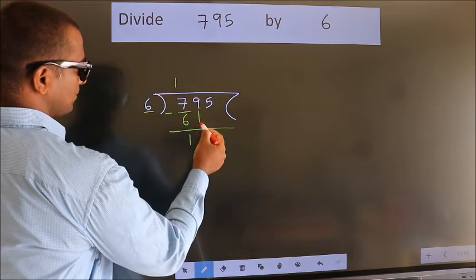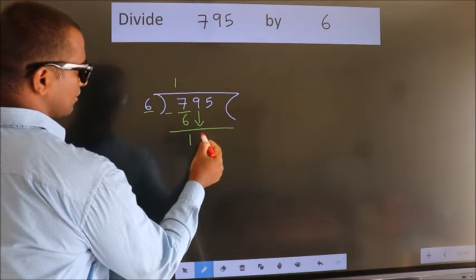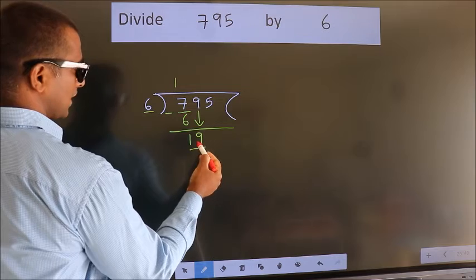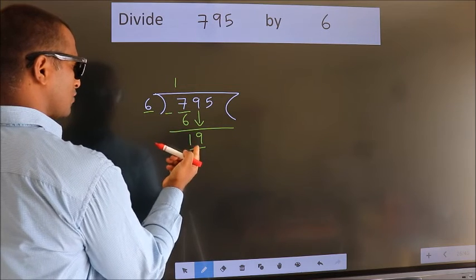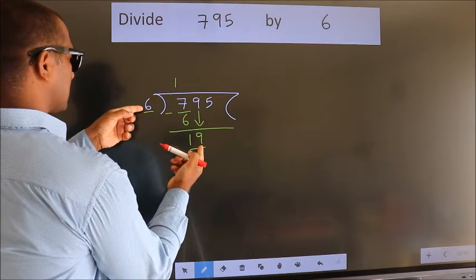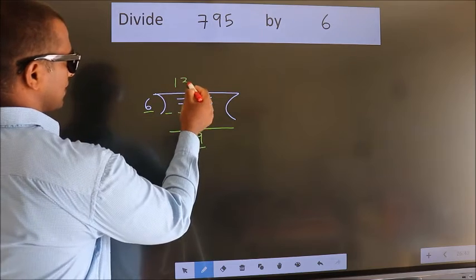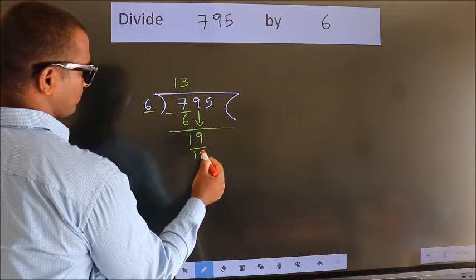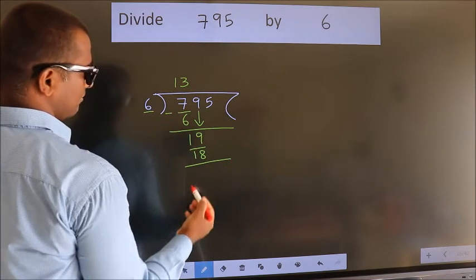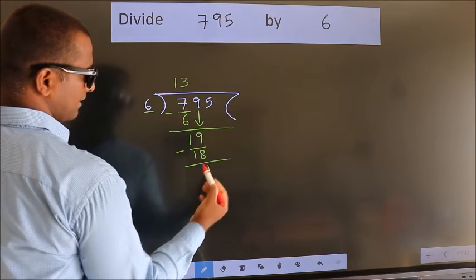After this, bring down the beside number. So 9 down, so 19. A number close to 19 in 6 table is 6 threes, 18. Now we subtract. We get 1.